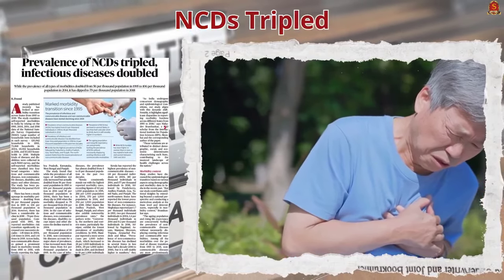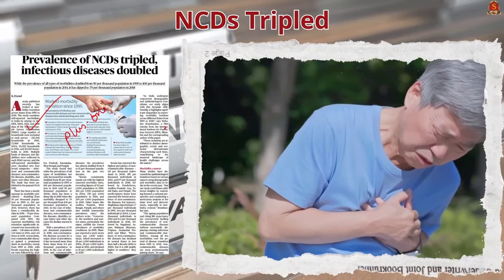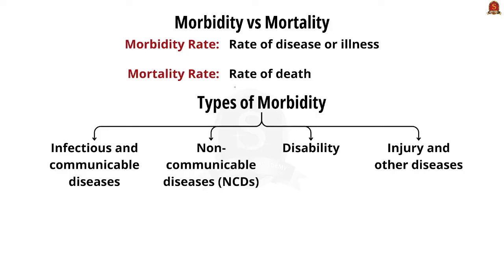Look at this science page article — it talks about a study published by the journal PLOS ONE. This journal utilized data from the National Sample Survey Organization and published reports on morbidity rates of India. Morbidity rate can be defined as the rate of disease or illness occurring in a population. It is different from mortality rate — mortality rate is the number of deaths in a particular population, whereas morbidity rate is the rate of disease or illness.